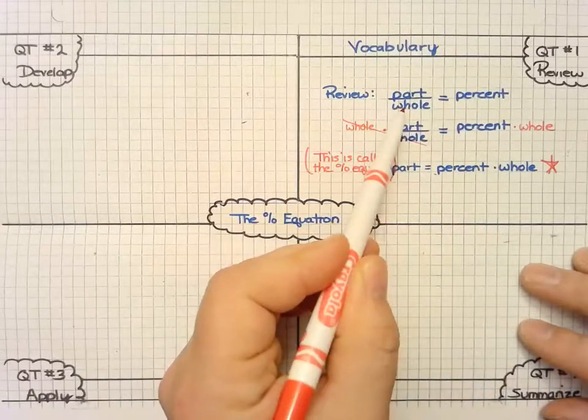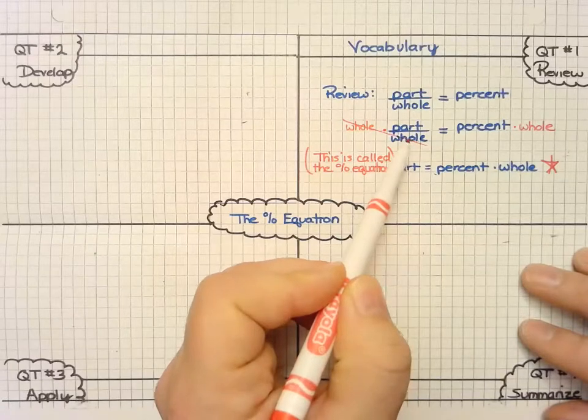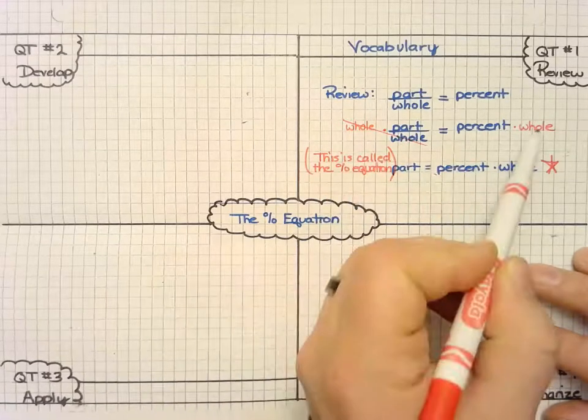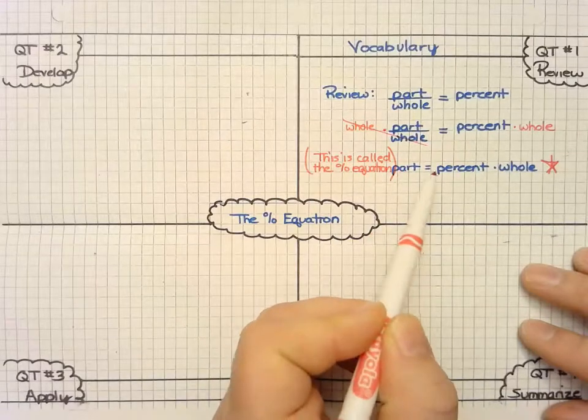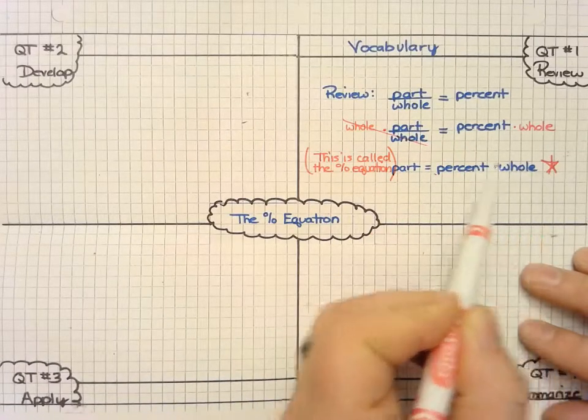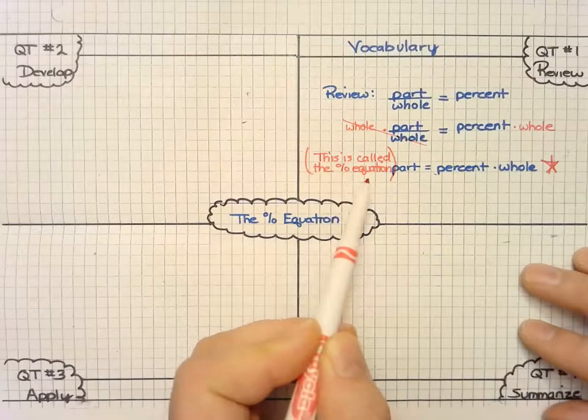However, if I try to get rid of the denominator and I multiply each side by the whole, now I have part by itself is equal to percent times the whole. And this is what we call our percent equation.